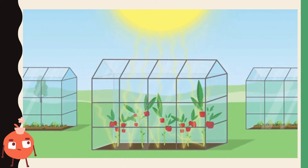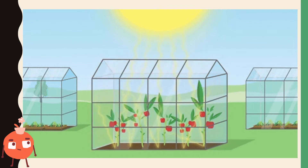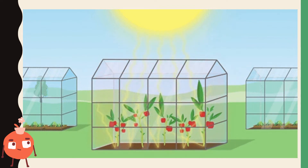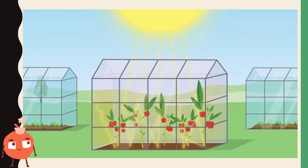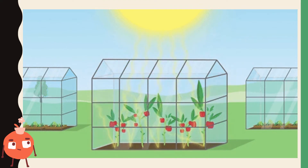Before we start with our topic, let's take a look at this animated picture. What can you observe inside the building? As you can see, the plants inside the structure receive sunlight. But the heat inside gets more concentrated than the outside. In gardening, this is called a greenhouse.